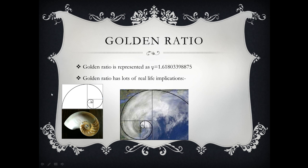The ratio of this side with this side is golden ratio. So if you just place it over this, you might notice that they both are in the exact same golden ratio. And even if you look at the hurricane, it also represents a golden ratio. So golden ratio has lots of real life implications.